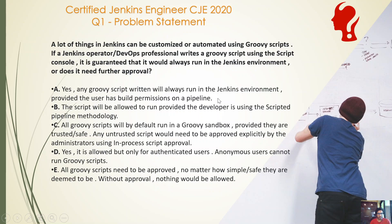Option B: the script will be allowed to run provided the developer is using the scripted pipeline methodology. Option C: all Groovy scripts will by default run in a Groovy sandbox provided they are trusted or safe; any untrusted script would need to be approved explicitly by the administrators using the in-process script approval. Option D: yes, it is allowed but only for authenticated users — anonymous users cannot run Groovy scripts. Option E: all Groovy scripts need to be approved no matter how simple or safe they are deemed to be, and without approval nothing would be allowed.